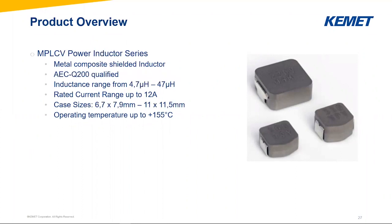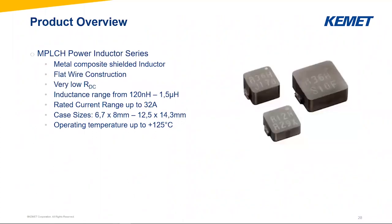The MPLCV — again, the V for vehicle means it is AEC-Q200 qualified. It is also a metal composite shielded inductor with a similar inductance range and only a few case sizes. Like all automotive components, we use here a 155°C operating temperature range. The MPLCH is our flat wire construction, with very low RDC. The inductance value range, as mentioned, is limited to low inductance values, which is not an issue — if you're using your inductor at high frequency, you don't need high inductance values. You have a high rated current range and low losses. This component is interesting for any application with high frequency, maybe wide-bandgap applications, wherever you need low losses and low inductance values at high frequencies.